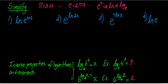Natural log of E to the X plus 2. Remember that natural log is the same thing as log base E. So if we rewrite this as log base E of E to the X plus 2, we get the inverse property of logarithms, where the base and the base of the argument are equal. That means this equals the exponent, which is X plus 2. So this whole thing is equal to X plus 2 — we've simplified it.